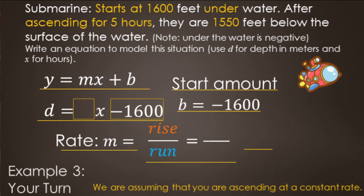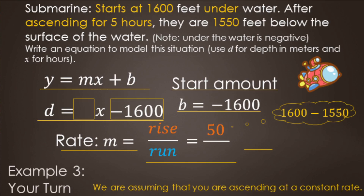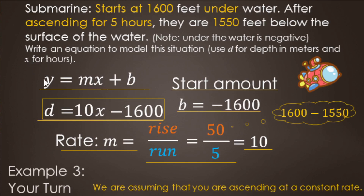For rate or slope — still rise over run. We're starting at negative 1600 and going up to negative 1550, so the change is up 50 feet. That took five hours, so the run is five. Fifty divided by five equals ten. So the equation is D equals ten x minus 1600. Summary: the depth is ascending ten feet per hour, starting at 1600 feet under water.